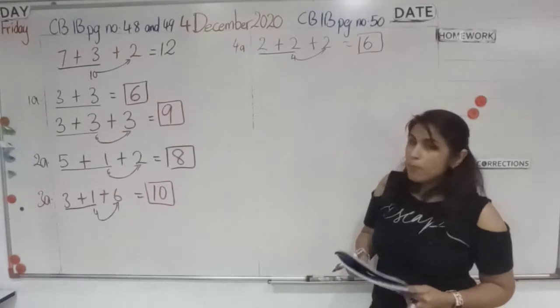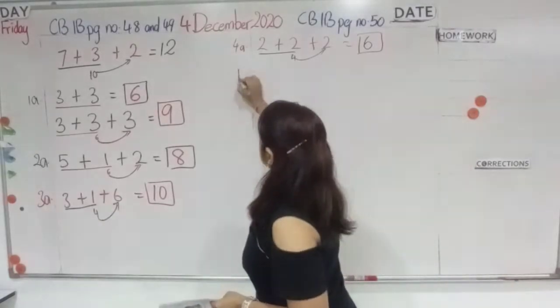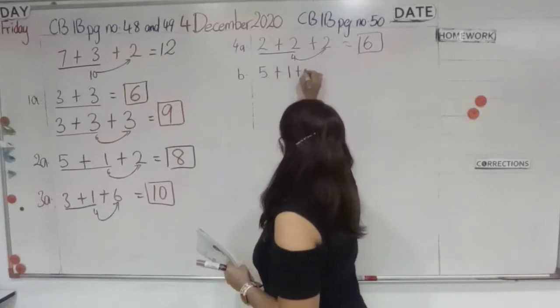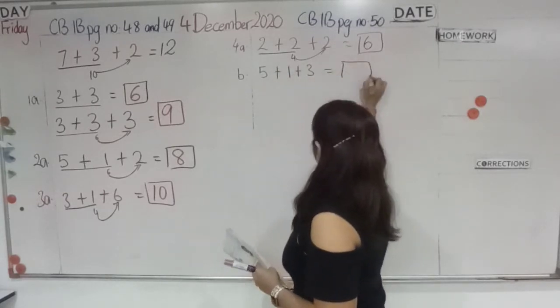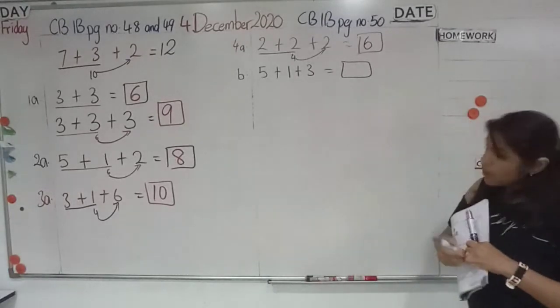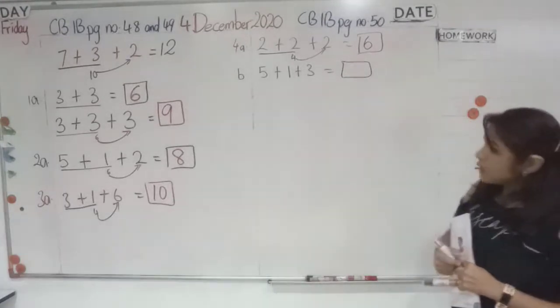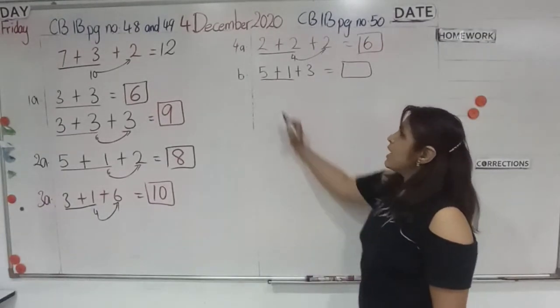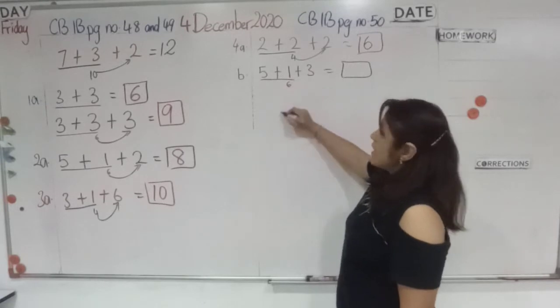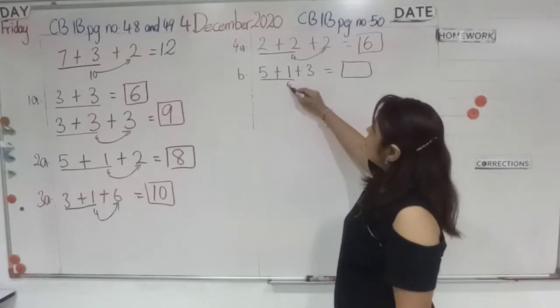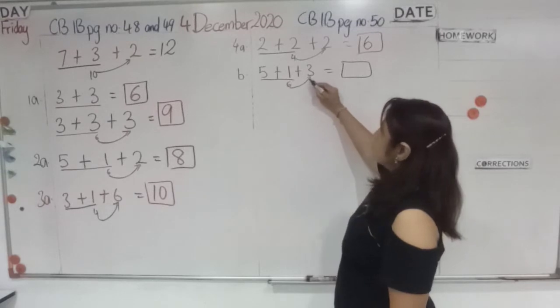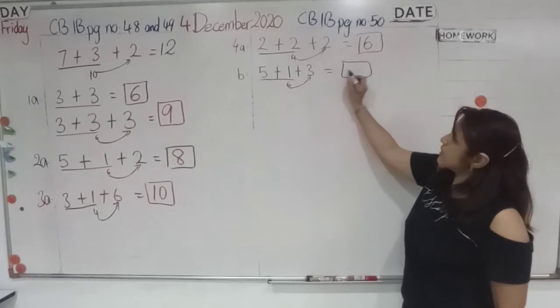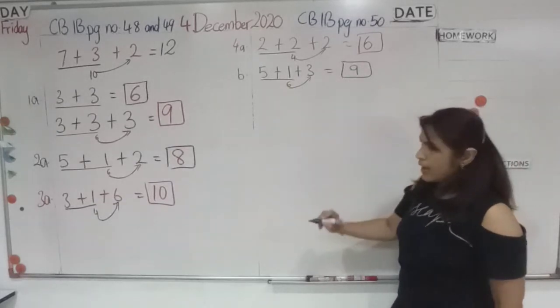Next, your 4B would be, what's the equation? 5 plus 1 plus 3. Now, when you have 5 plus 1 plus 3, your first step is to underline the first 2 numbers. Add them. 5 plus 1 is 6. Next step, you will draw an arrow pointing to the answer you got from 5 plus 1 is 6. 6 plus 3 is 9.